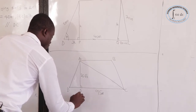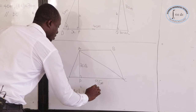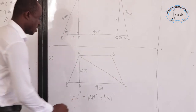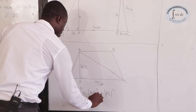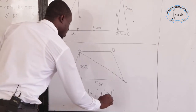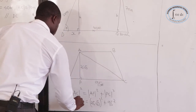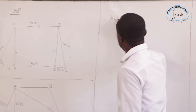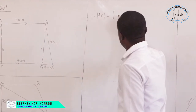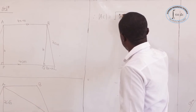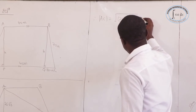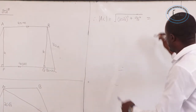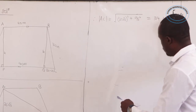By Pythagoras theorem, AC squared equals AP squared plus PC squared, which equals (25 root 3) squared plus 95 squared. Therefore AC equals the square root of (25 root 3) squared plus 95 squared. Using the calculator, this gives 104.403.